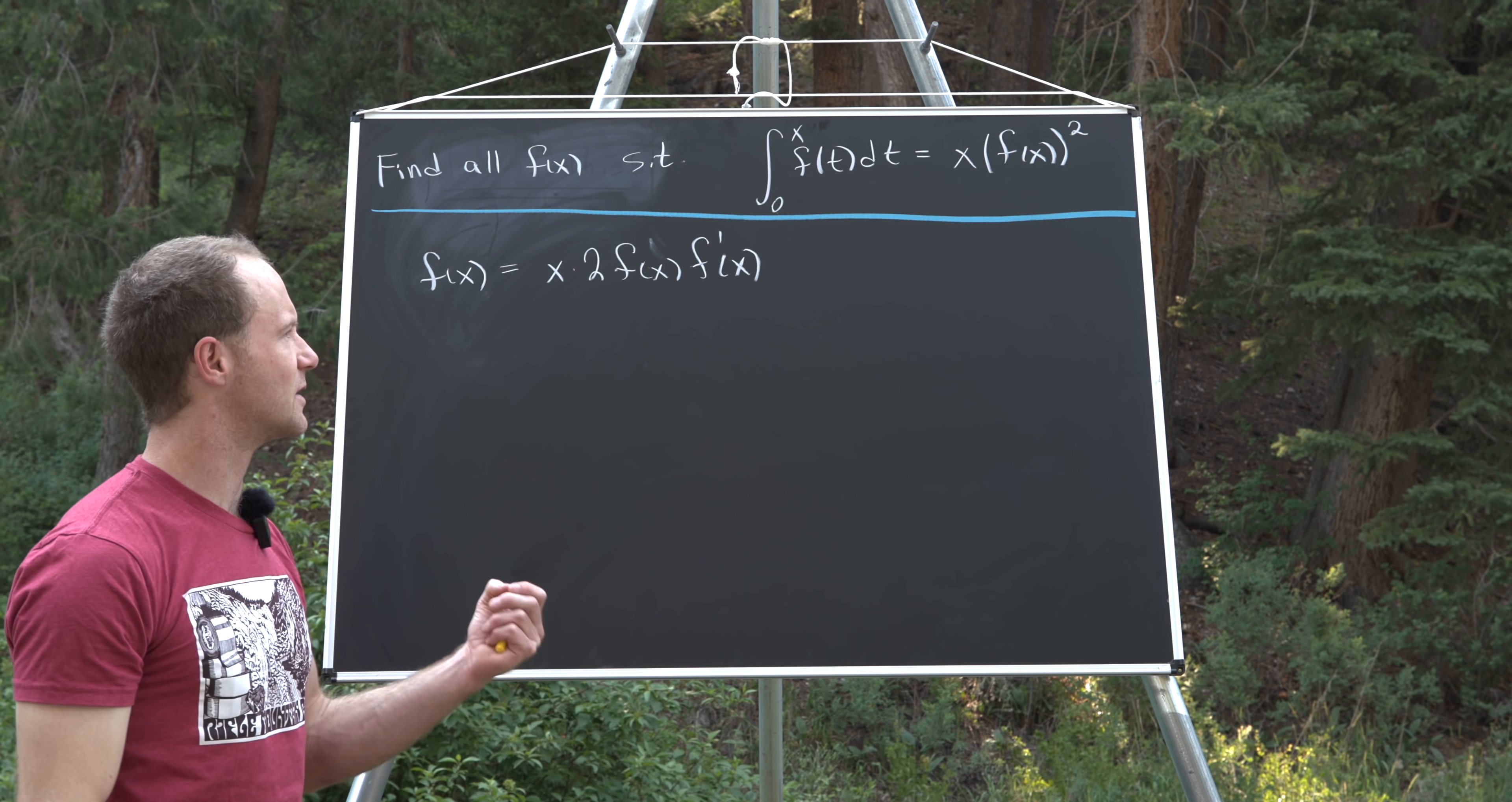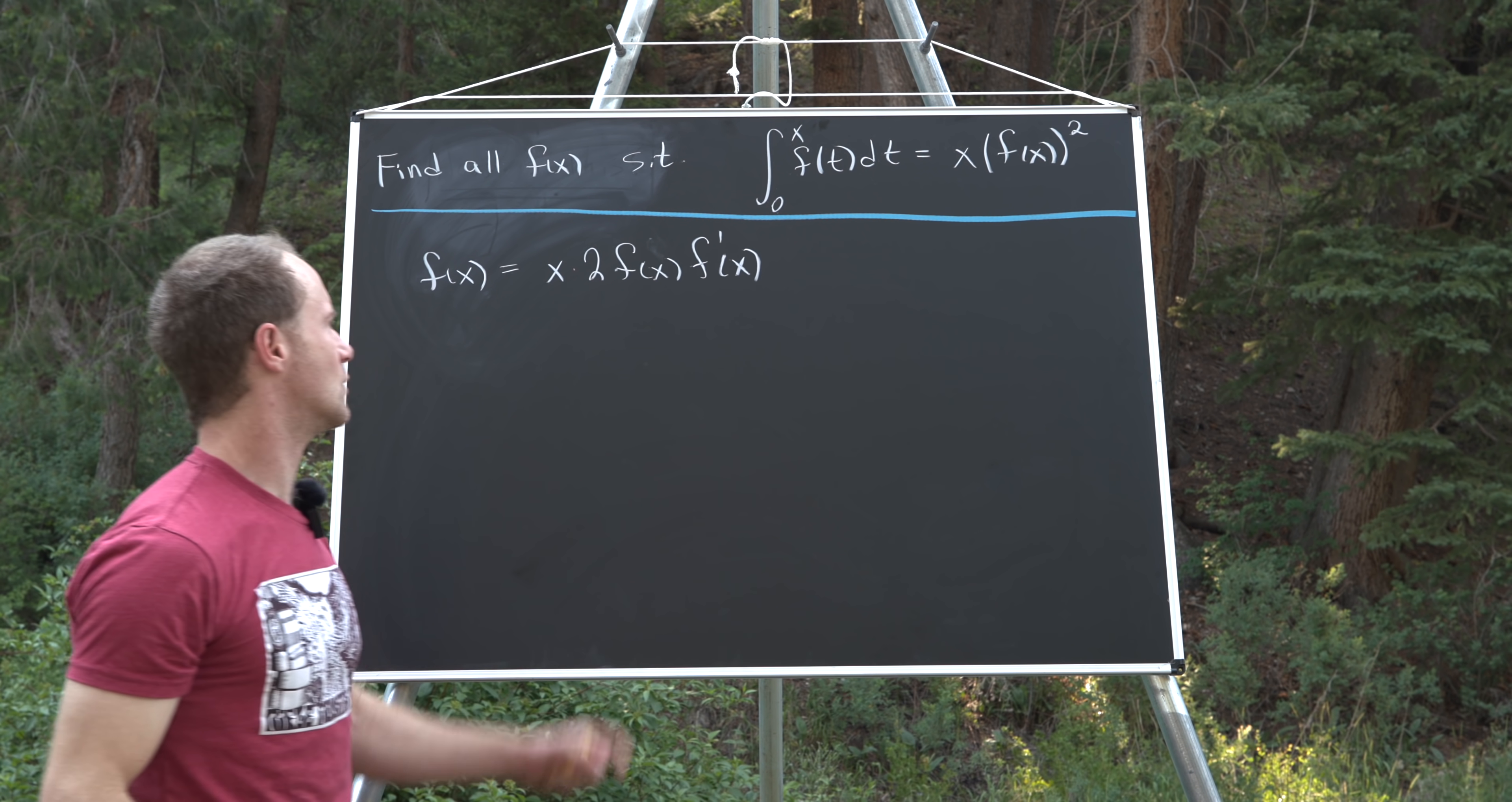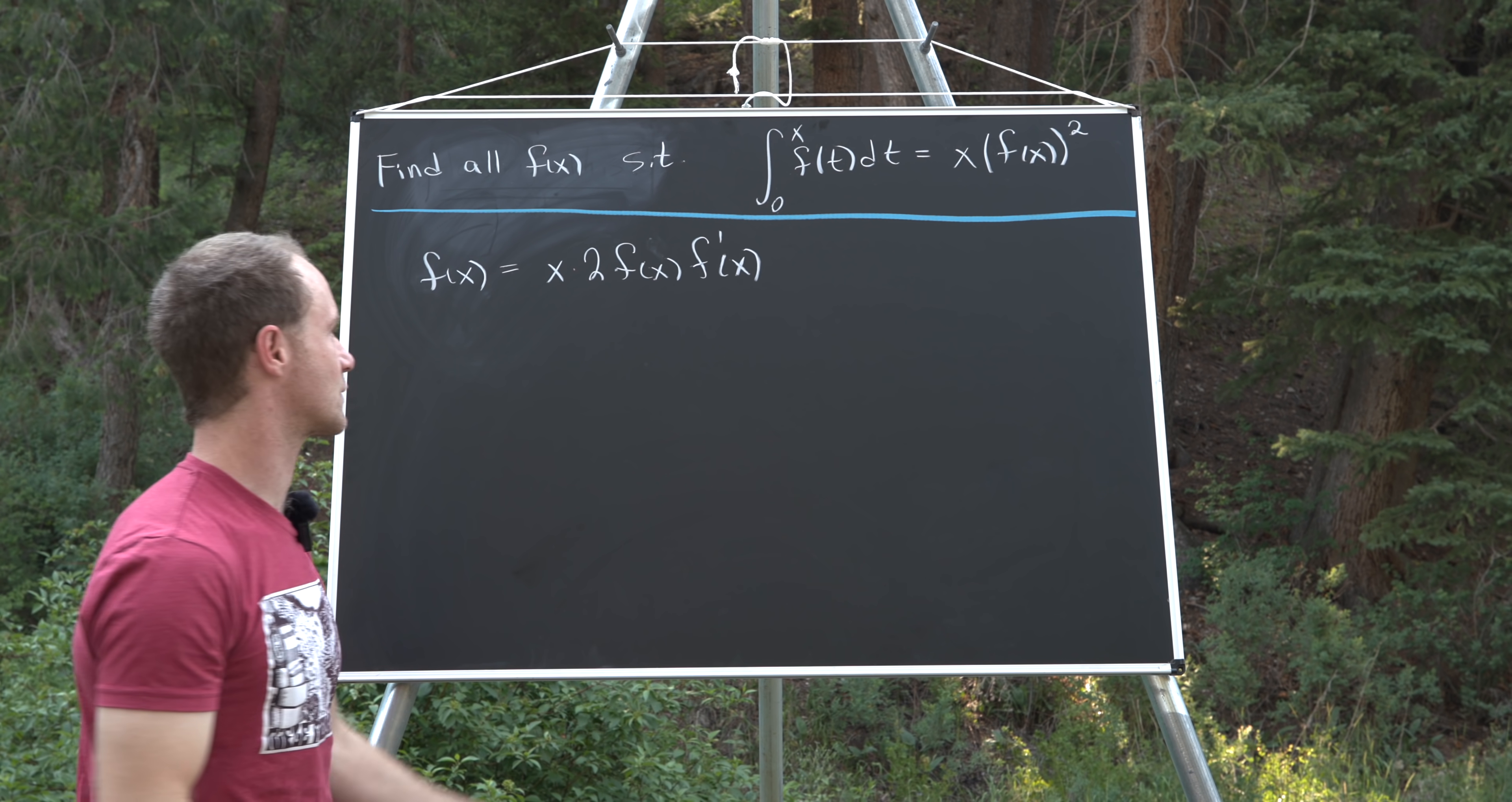Because it's like we're composing f of x inside of the square function, so we get like two times f of x times the derivative, again by the chain rule.